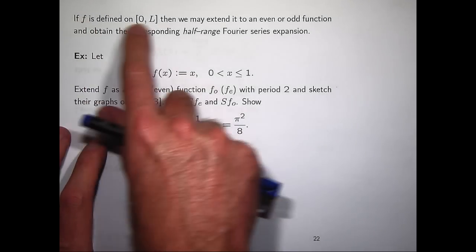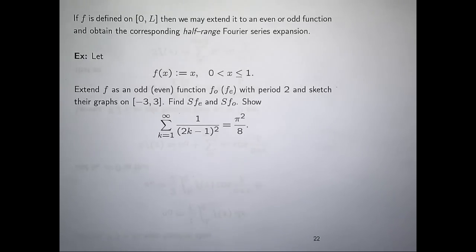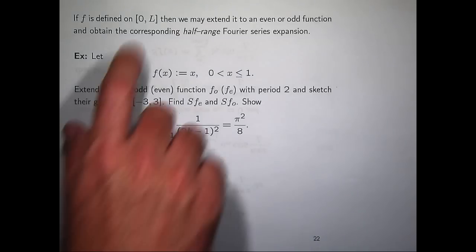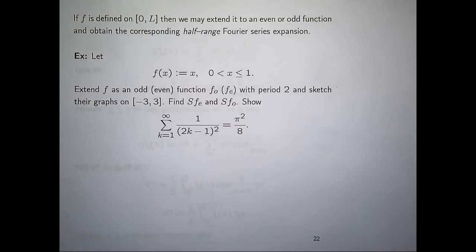If f is defined on a non-symmetric interval, we can extend f to make it an odd or an even function, and then obtain the corresponding Fourier cosine series or the Fourier sine series expansion. This is what we'll do when we revisit the heat equation — we'll have some initial temperature defined on an interval, and depending on what we want to do, we can extend that function to minus L to L as either odd or even, then make it periodic.